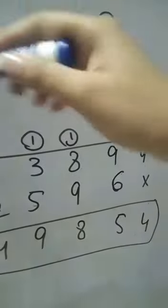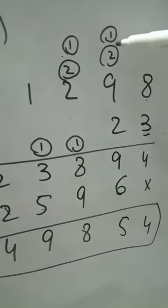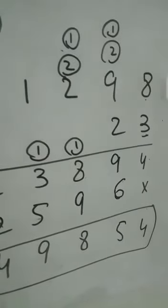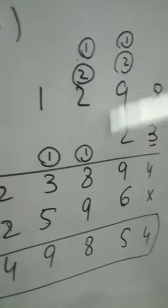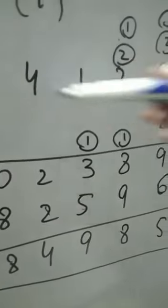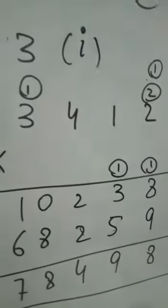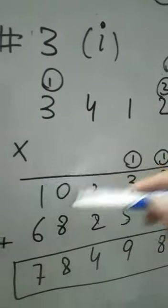3 times 8 is 24. 4 here and 2 carry. 3 times 9 is 27, which becomes 29. 9 here and 2 is carry. 3 times 2 is 6, plus 2 is 8. 3 times 1 is 3. 4 times 3 is 12, so 2 here and 1 is carry. 3 times 3 is 9, plus 1 equals 10.